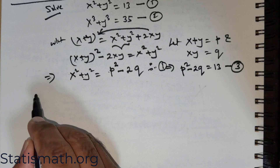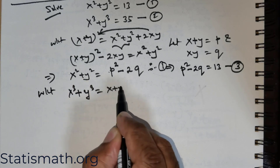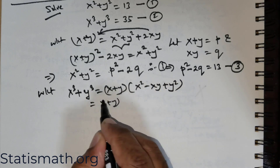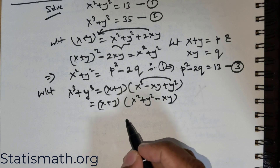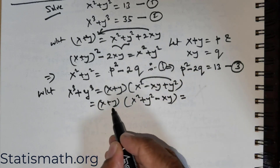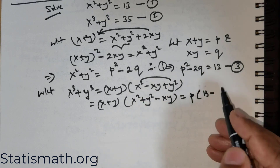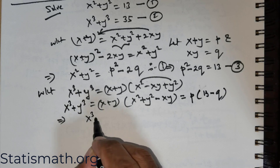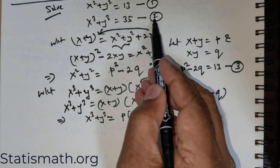Now I draw your attention to another algebraic identity: x³ + y³ = (x + y)(x² − xy + y²). I club x² with y² and rewrite the right-hand side as (x + y)(x² + y² − xy). In place of x + y I substitute p, in place of x² + y² I substitute 13, and in place of xy I substitute q. So x³ + y³ = p(13 − q).